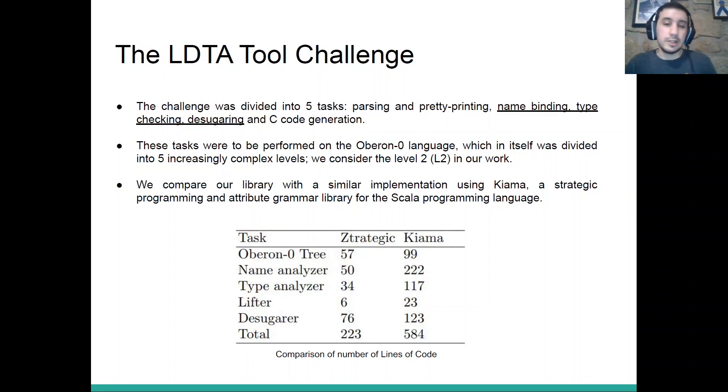Finally, we participated in the LDTA tool challenge, which is a challenge divided into 5 tasks, and which only 3 of them were interesting to us. These tasks are for parsing and pretty printing, name binding, type checking, desugaring, and C code generation. And we only care about name binding, type checking, and desugaring, because they are the most adequate for our library. This was all performed on the Oberon Zero language, and we opted to work on an intermediate level of complexity of this language, which is level 2. Because it is relatively complex, we have more complex constructs such as for cycles and cases, but we do not have too much overhead and complicated code, and we can still keep our example relatively small.